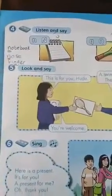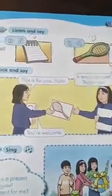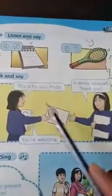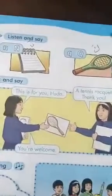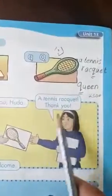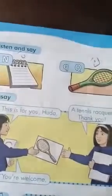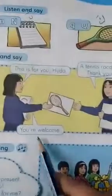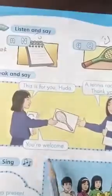Hi guys, how are you? Hope you are fine. Exercise number 5, page 39, pupil's book. Here we have Asma and Huda — they are talking to each other. Asma said: this is for you, Huda — and gave her a tennis racket. Huda said: a tennis racket? Thank you. Asma replied: you're welcome.